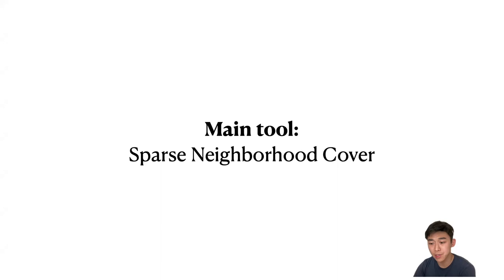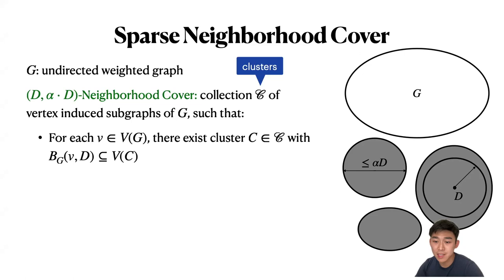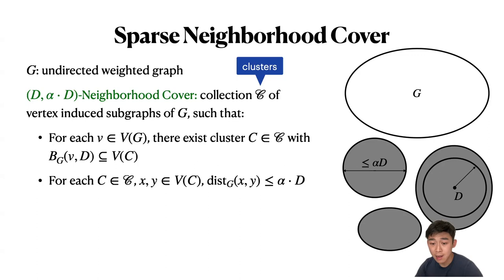The main tool we use is sparse neighborhood cover, used many times in previous works including Chuzhoy's 2021 paper. Given an undirected weighted graph G, a (d, alpha*d) neighborhood cover is a collection C of vertex-induced subgraphs of G. We call such a subgraph a cluster, and it must satisfy: for every vertex v in G, there exists a cluster such that the ball of radius d around v is completely contained in that cluster; and for every cluster and every two vertices in it, the distance between them is less than alpha*d in G.